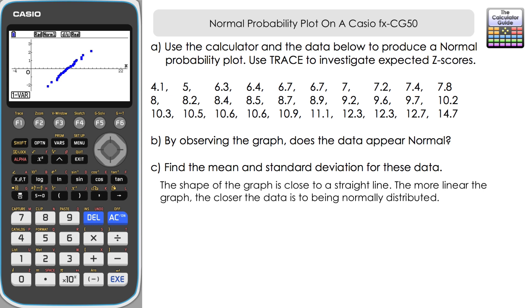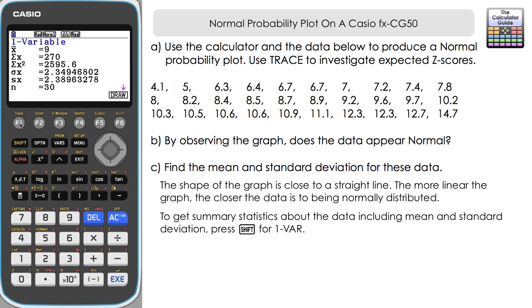And then lastly, part C, what we can do is we want to get the mean and standard deviation is if we press F1 for one variable, you can see we've gone straight to the information that we need. We've got X bar at the top there.